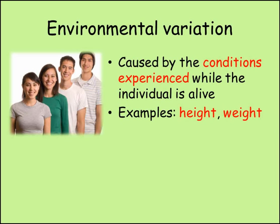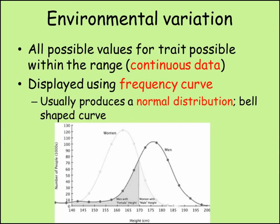In contrast, if the trait is determined through environmental differences, then it will show continuous variation. For example, height is affected by your diet, your health, exercise when younger and so on. If we measured the heights of a large number of people, we would get what is known as a normal distribution, which looks like this. This shape graph is known as a bell curve. It shows that most people are average, and the further you are from average for that trait, the more unusual you become.